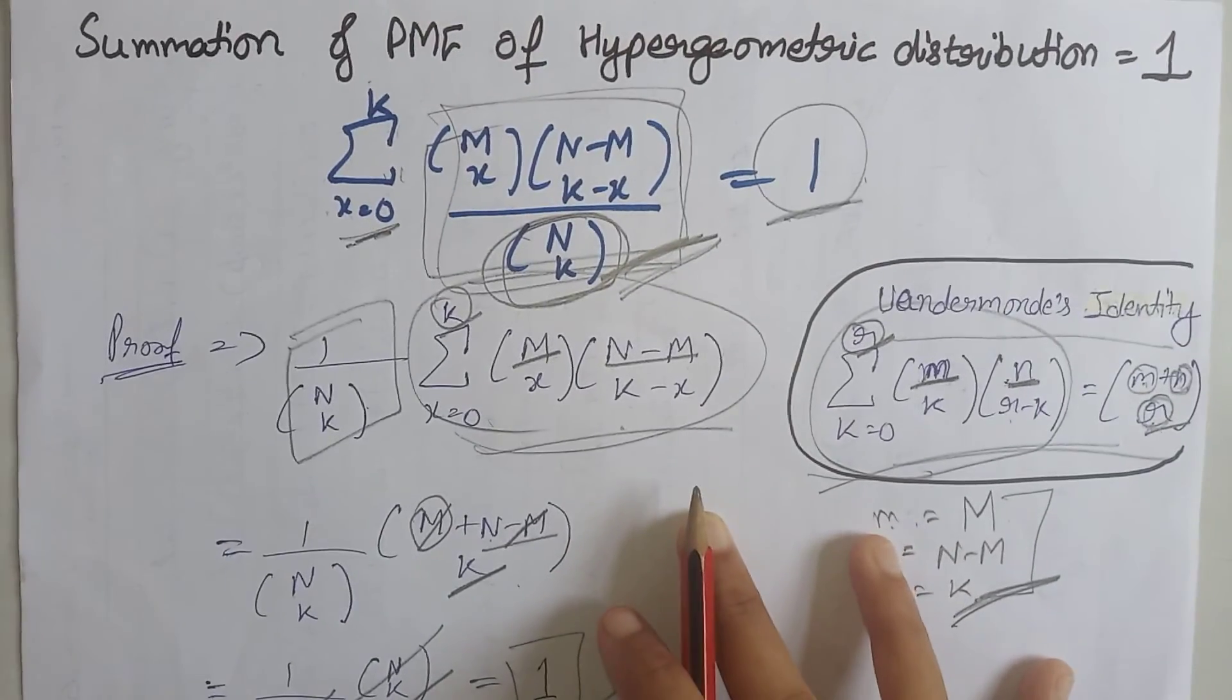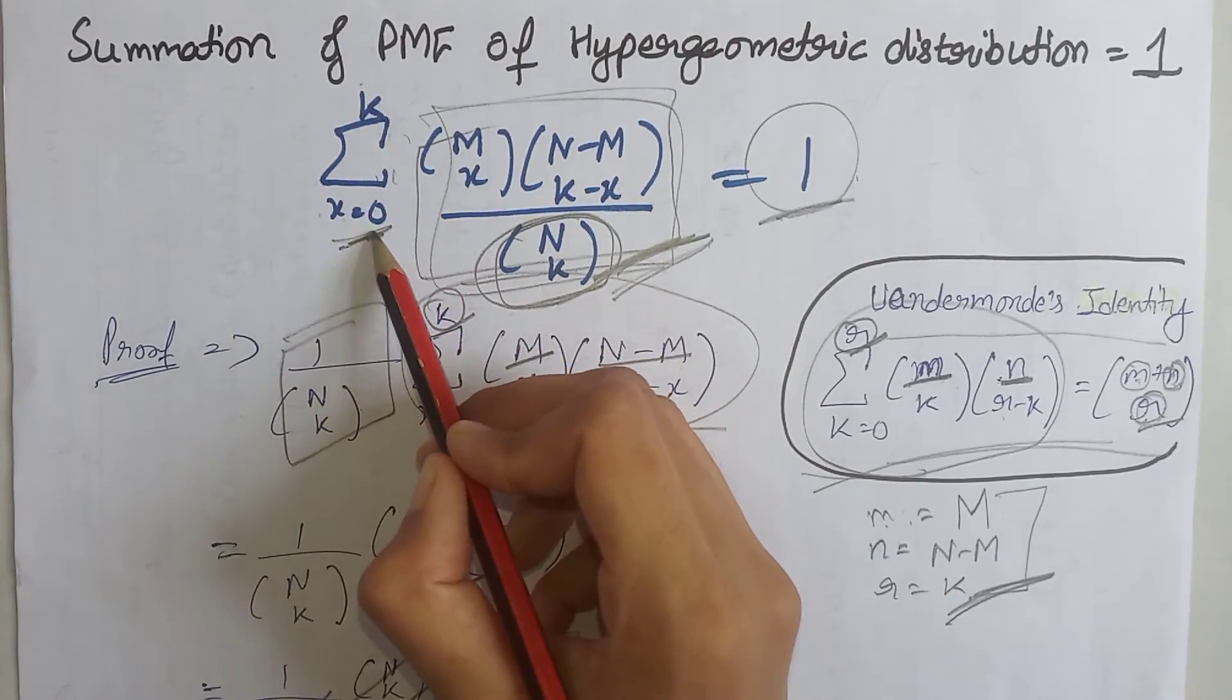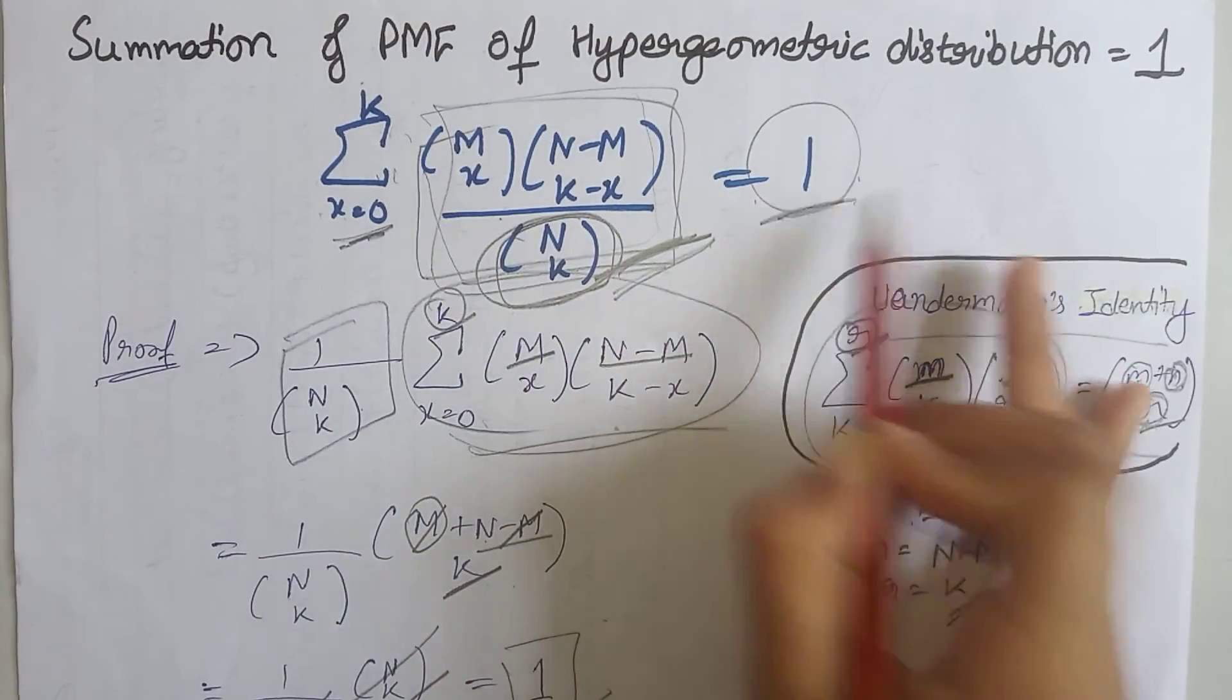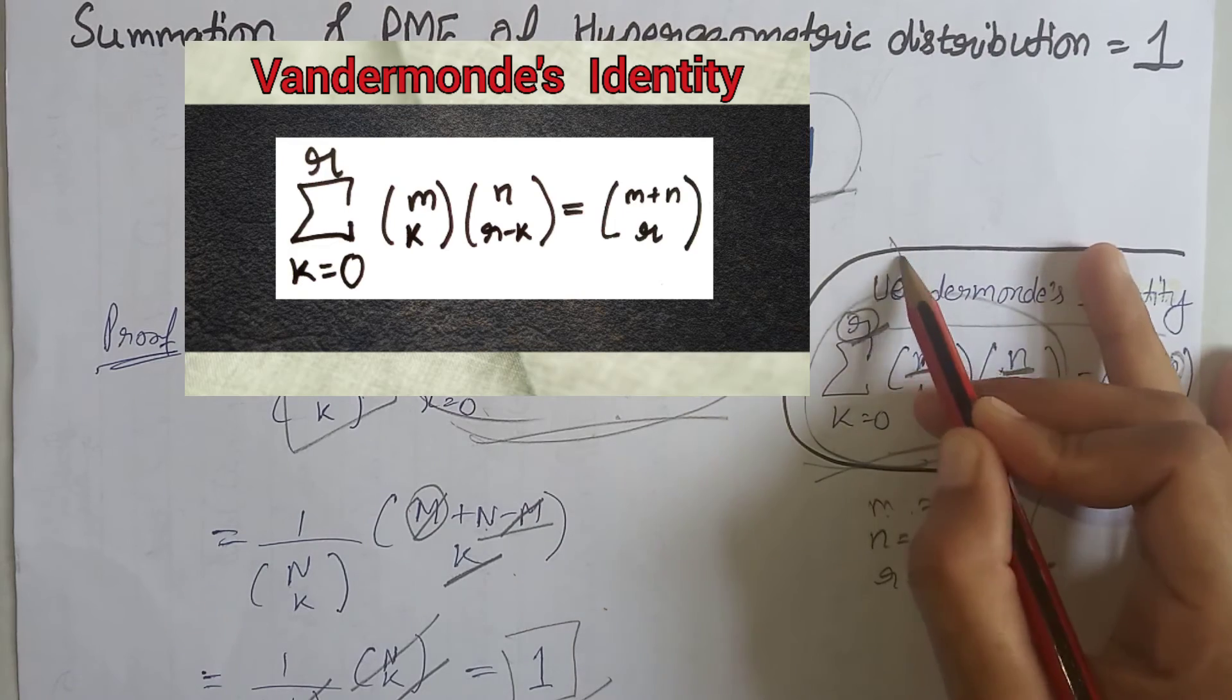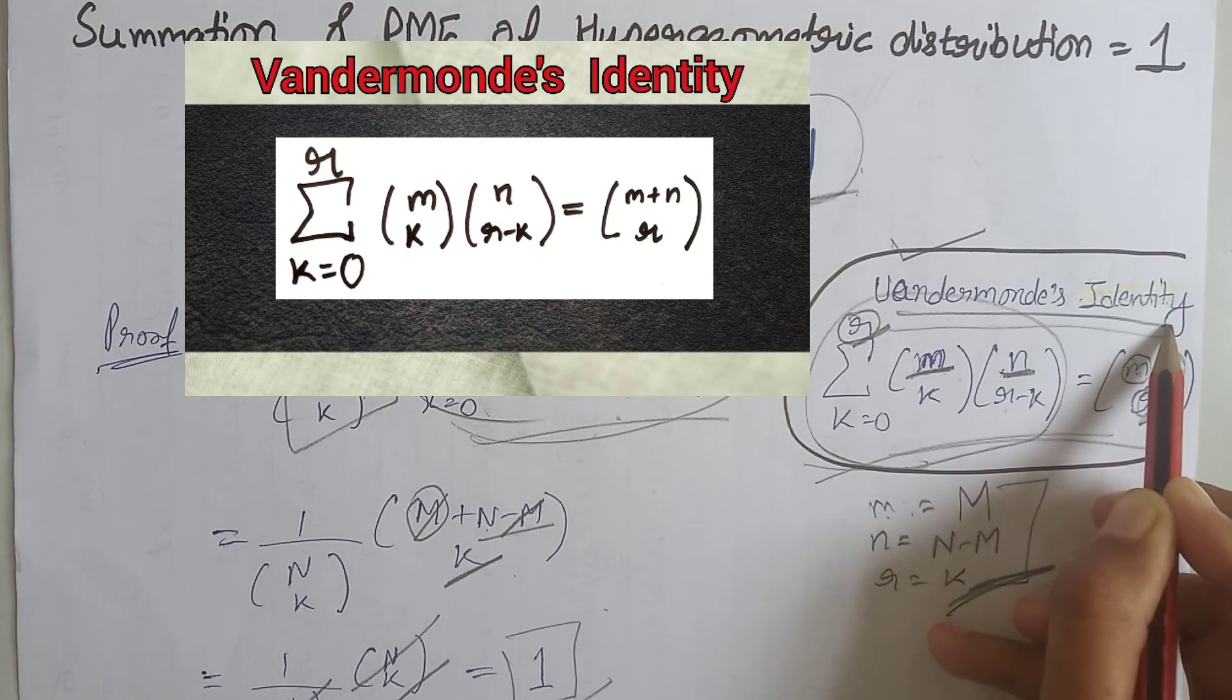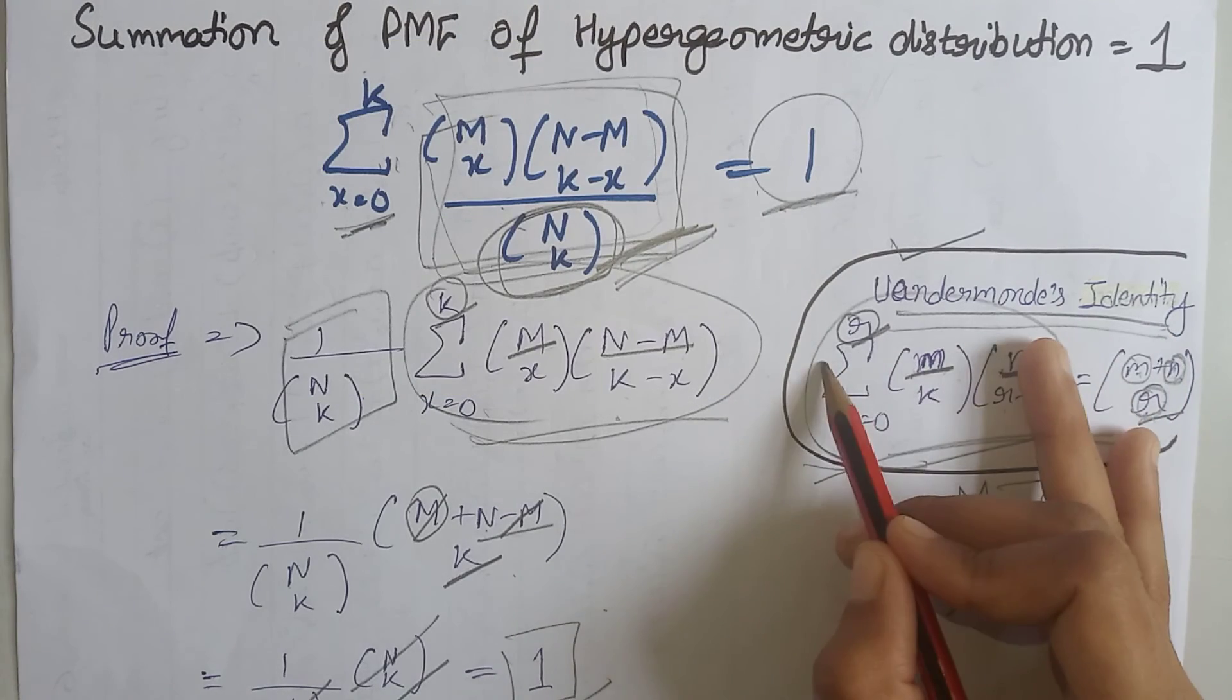That is, we have proved that the summation over all values of x of the probability mass function of the hypergeometric distribution is equal to 1. We have also uploaded a video on our channel in which we have proved this identity in a very easy way, so you can watch that video also.